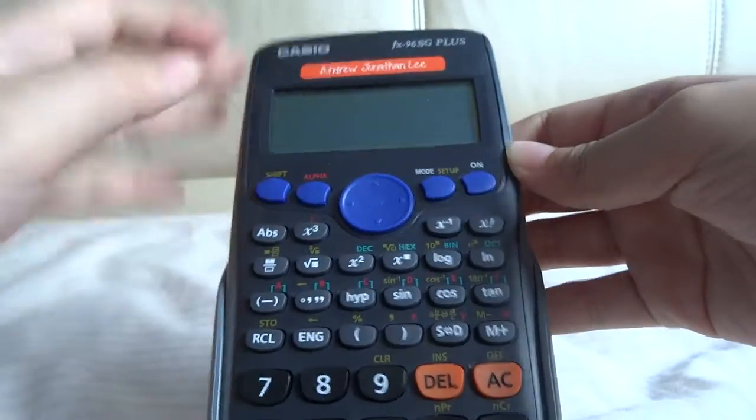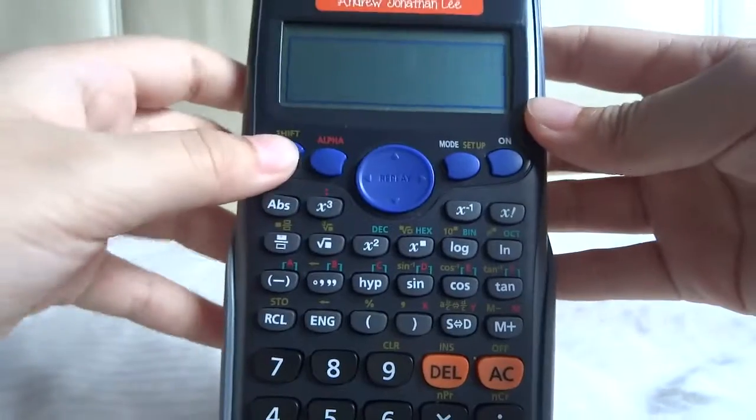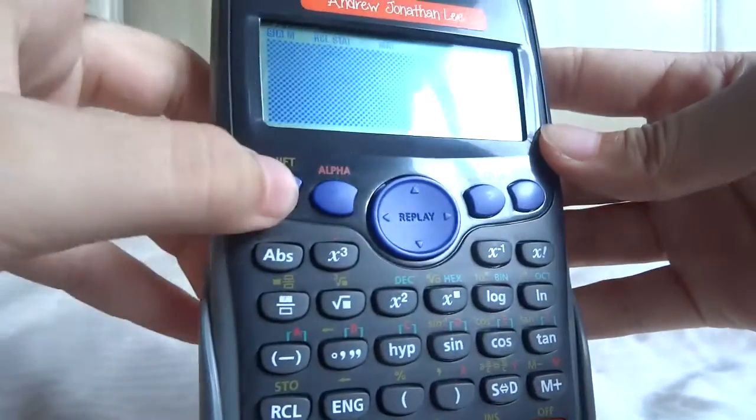Press SHIFT and you get this blank screen. Shift again, you get this box. Shift, you get this checkerboard.